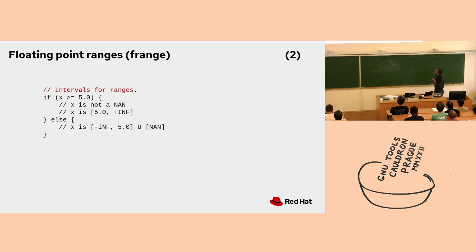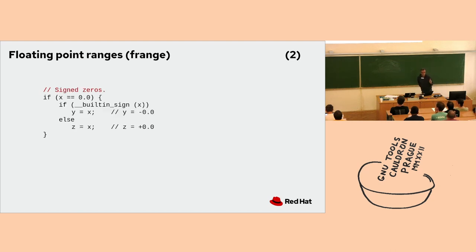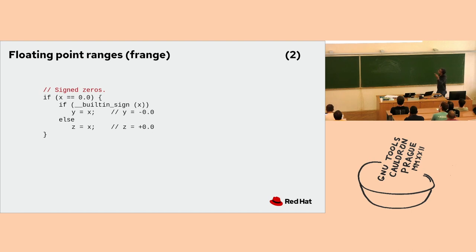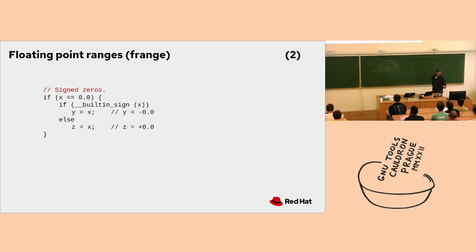I thought everything was working and then I noticed the concept of signed zeros — and being a newbie to floating point I was frustrated quickly. This is a problem for VRP implementation: on the true side of a conditional where X equals 0.0, we are not free to propagate any value of zero into either operand unless we're sure about the sign. I had to go back and model the sign across the floating point object. Jacob also suggested that if we're modeling the sign, it would be nice to also keep track of signaling NaNs, which could be optimized away.